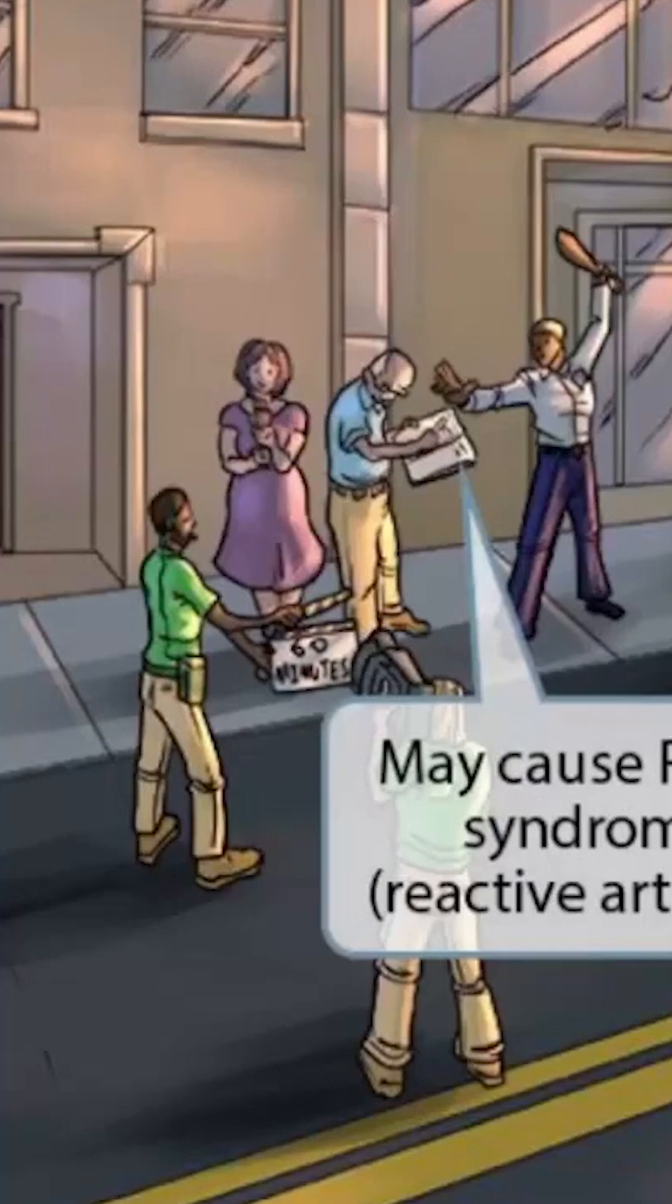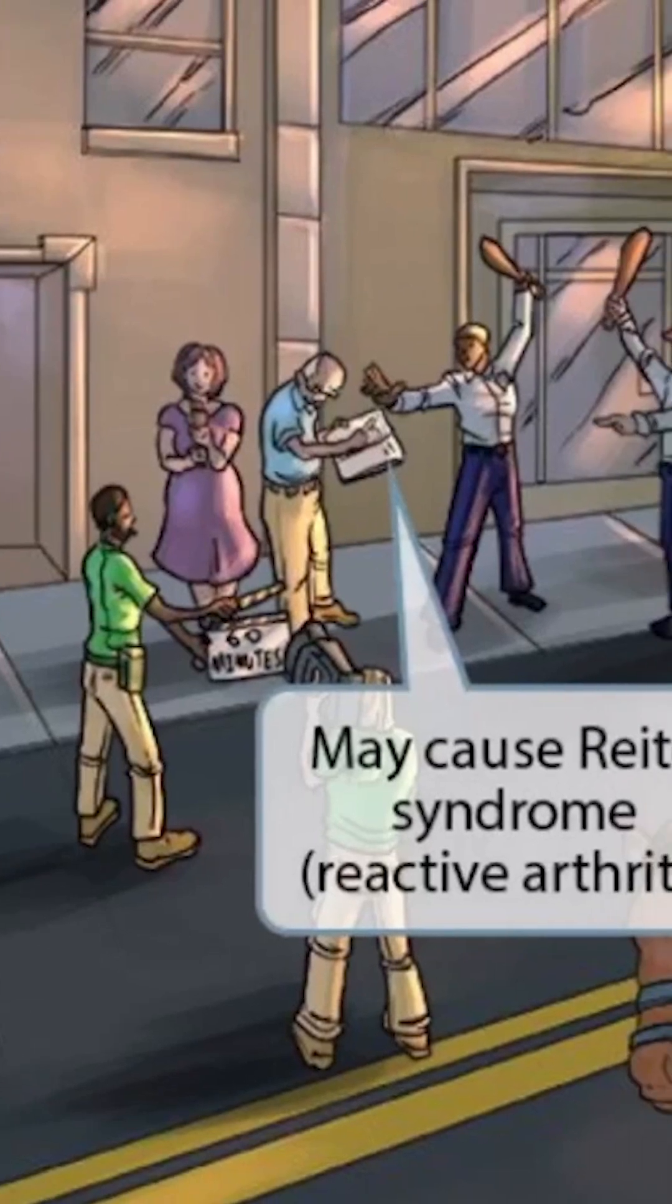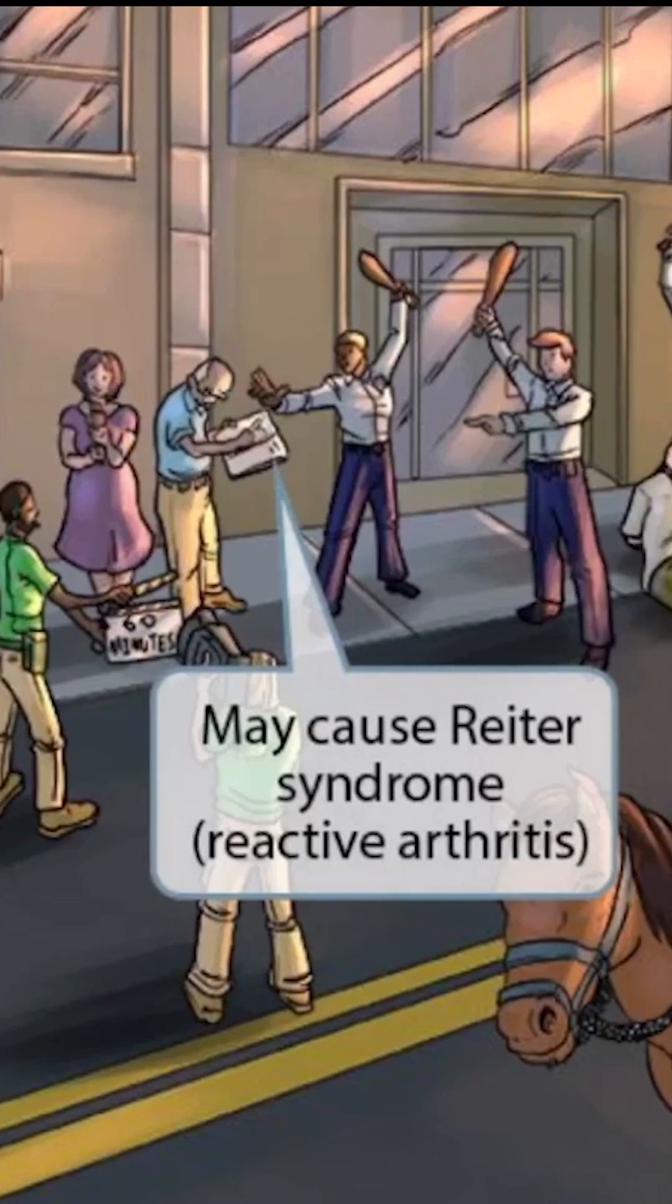Now we've added a guy next to the camera crew who appears to be writing down some information. He's actually a journalist and is taking notes about how law enforcement is unlawfully shutting down this camera crew. Anyway, just like in our Salmonella video, the guy writing is here to help you remember that shigella may cause Reiter syndrome, which is also known as reactive arthritis.